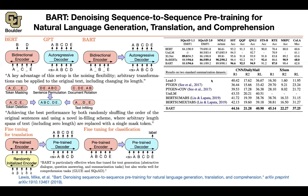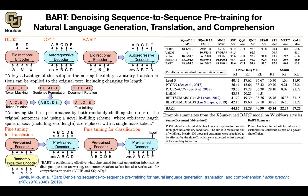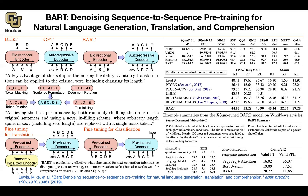For instance, for summarization on two different datasets, BART is doing the best. Here's an example of a summary — this is the text, this is the output of the model. You can do abstractive question answering, which is a generative task, and BART is doing the best there too. The other application is conversational response generation — you keep talking to the AI system, it keeps generating answers or even asks questions. BART is doing the best on that as well.